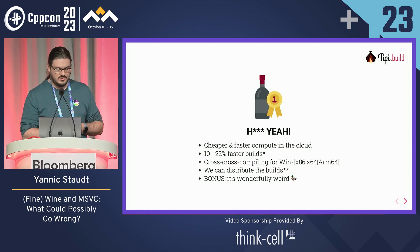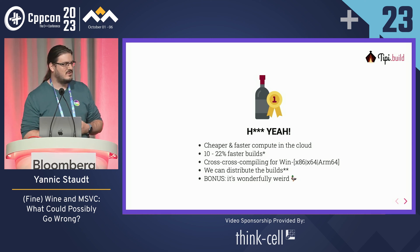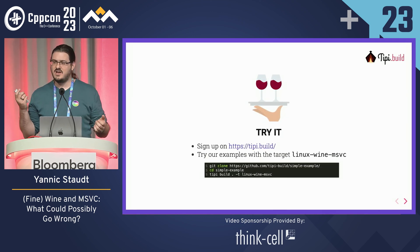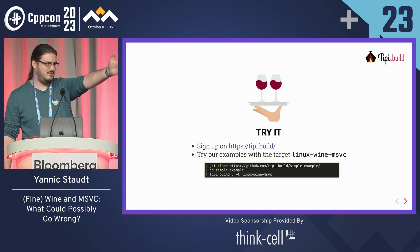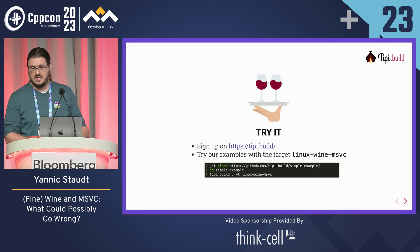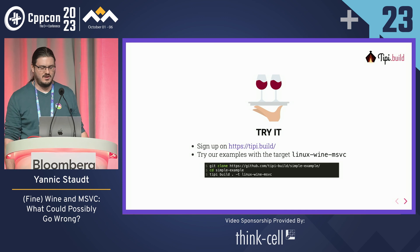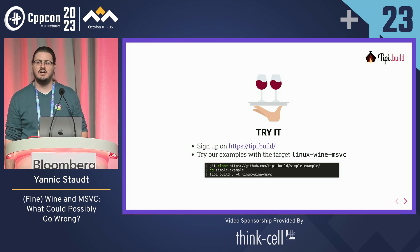It's great. We can do distributed builds. So Microsoft, we need to talk. It's wonderfully weird and it works. I'm really happy to say that you actually can try it. You can sign up at tpbill, the company I co-founded with Damien sitting back there. We'll be talking about this a bit more tomorrow. And you can pick any one of the examples on our website, swap out the target for Linux-MSVC-Wine-MSVC, hit enter, cross fingers that I didn't tell a lie, and it should work.